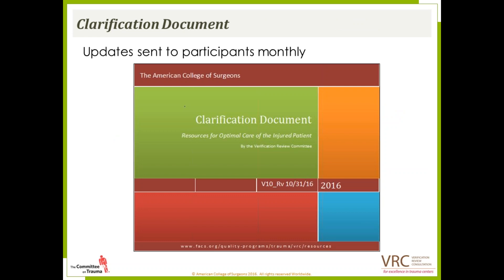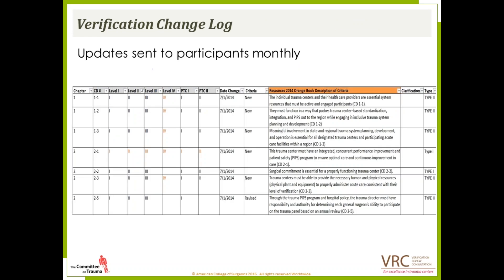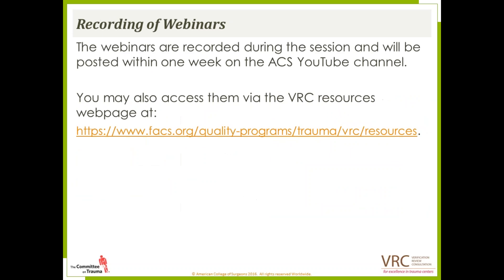There is one from January as well. The change log is an Excel document. You can sort it however you see fit, either by CD number, by level, or by date if anything new has come up. Recordings of all our webinars are posted on the ACS YouTube channel and are accessible through our resources web link — listed towards the bottom of the page. This recording will be available within the week.